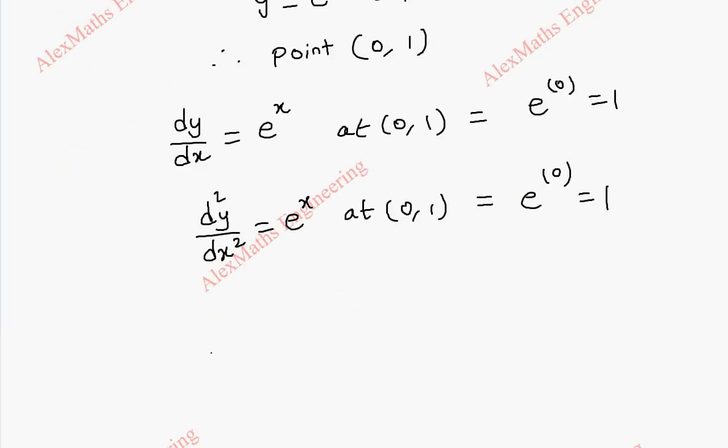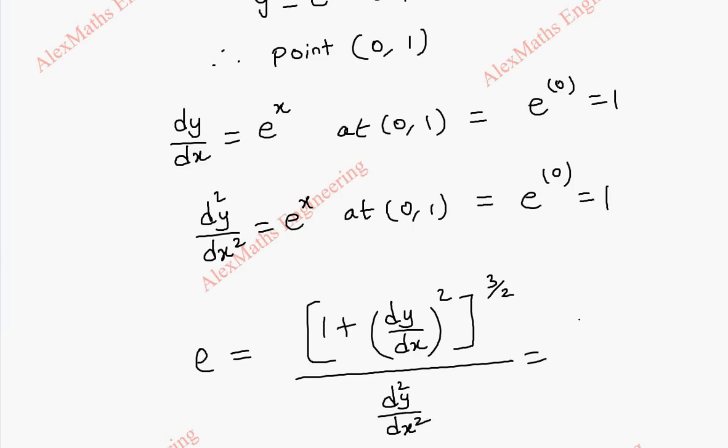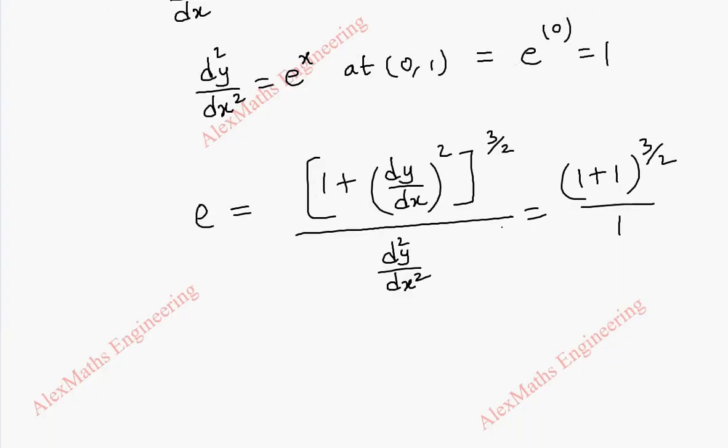Now, the radius of curvature formula is ρ equals [1 plus (dy/dx)²] to the power 3/2, divided by d²y/dx². So, this is [1 plus 1²] to the power 3/2, divided by 1. Therefore, the value of the radius of curvature ρ is 2 to the power 3/2.